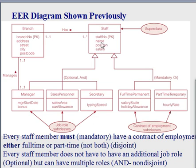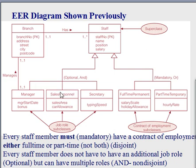While all staff members are in the staff, some of them might be managers, some of them might be sales personnel, some of them might be secretaries, or they could be a combination of manager and sales personnel. The optional means it's optional — they don't have to be in one of these subcategories. Some people can just be regular employees in a different department; they don't have to be in all of these.